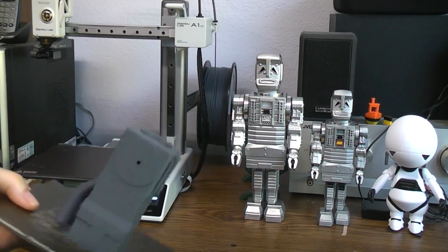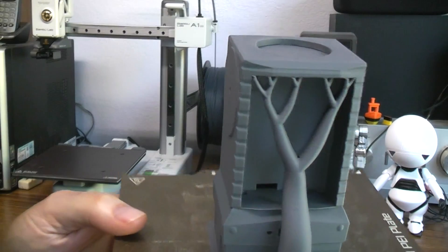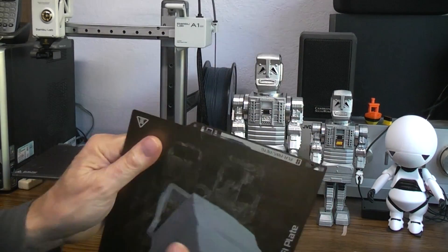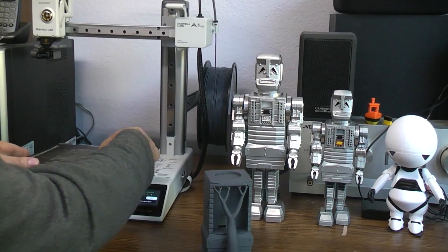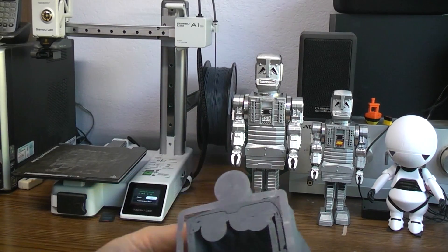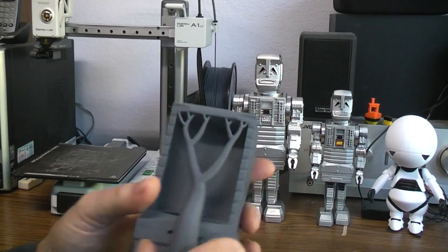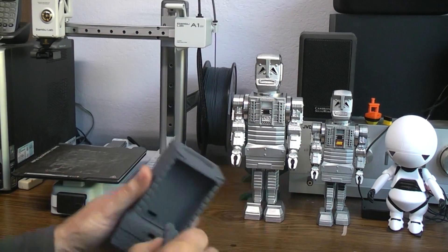So here you can see the tree support on the back, and I had put a small brim around it just to make sure it wouldn't come off.